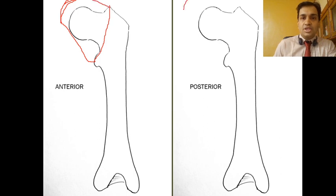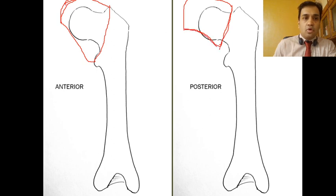So on the anterior aspect, the hip joint capsule extends from the acetabular labrum proximally to the intertrochanteric crest distally.